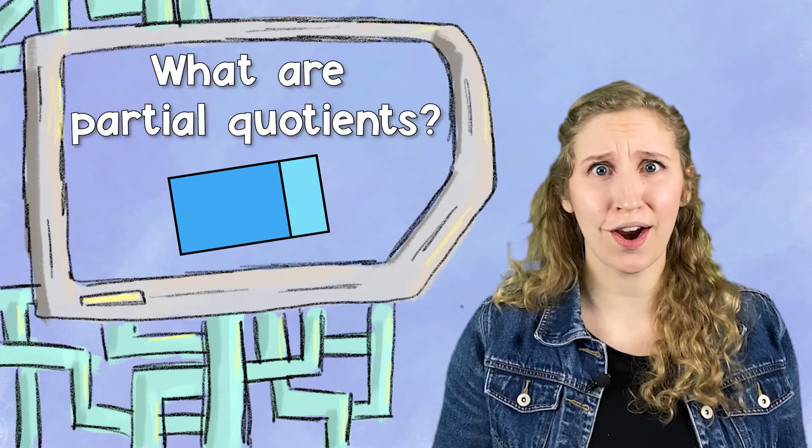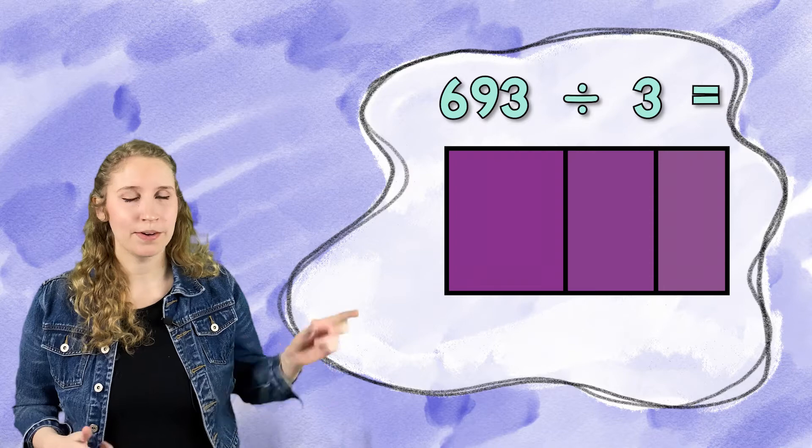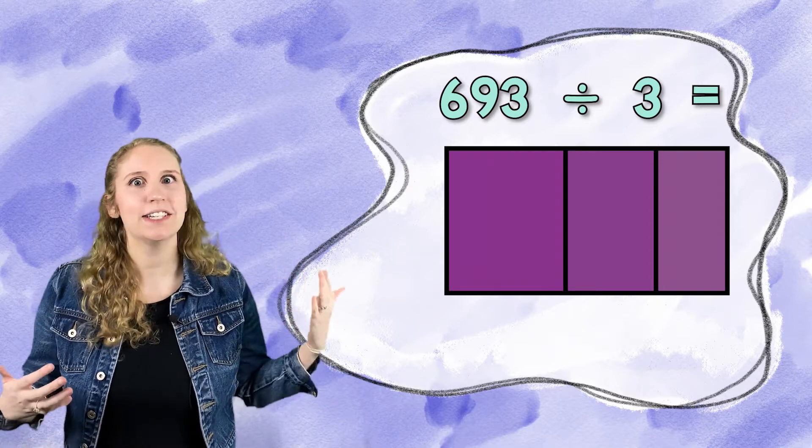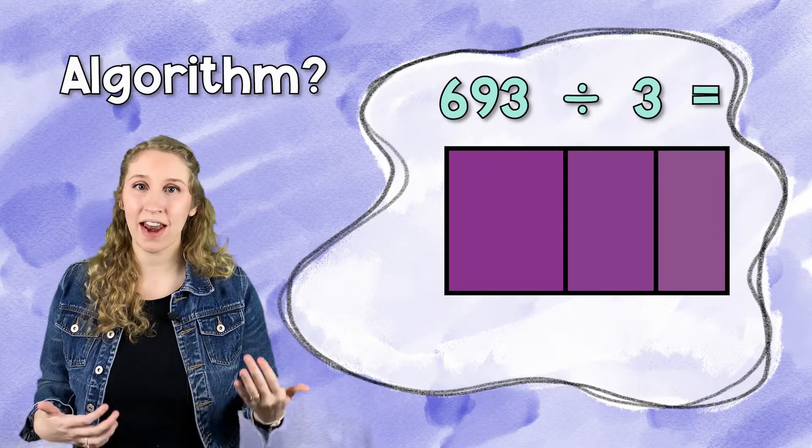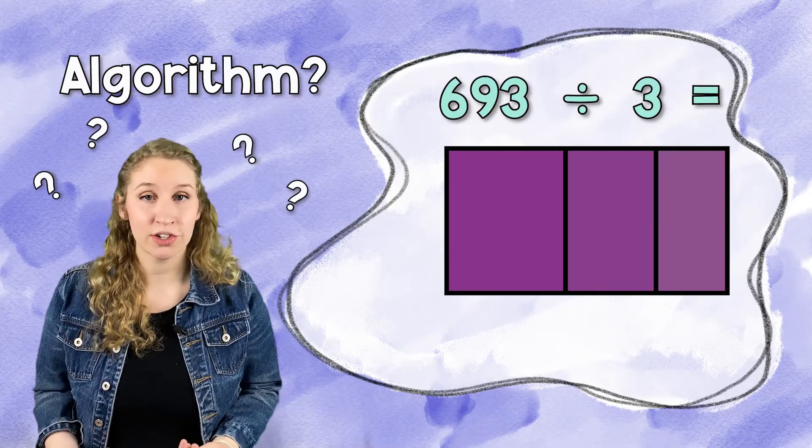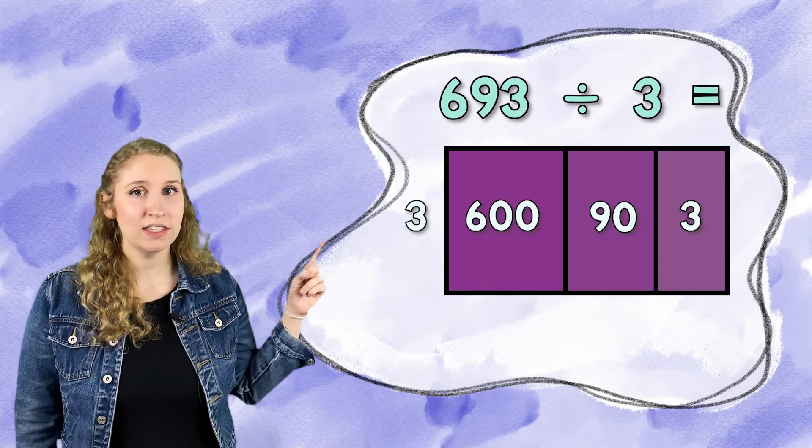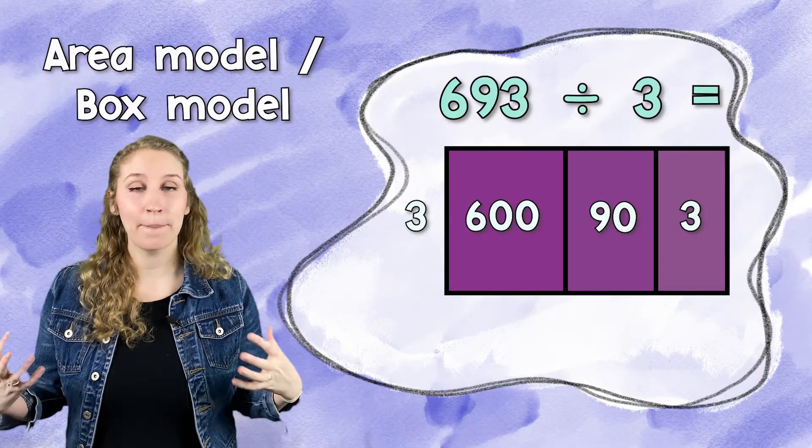So what are partial quotients? Sometimes when we have super large numbers like this, it's really hard to divide, or you might have an algorithm or a lot of rules but you don't really understand what you're doing. So what can you do? You can actually use a model like this to break down a larger number by place value.